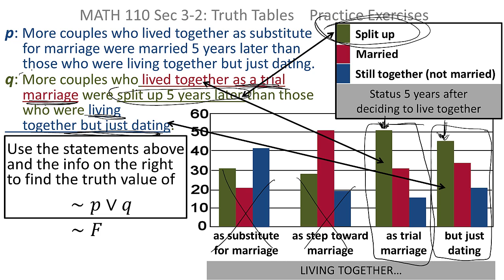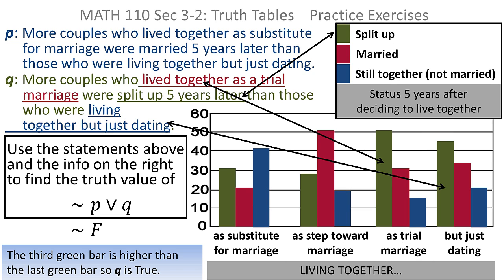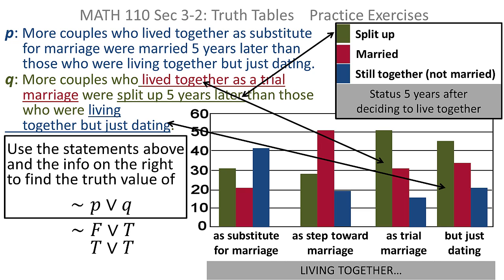Q is saying that the green bar in the 'trial marriage' grouping is higher than the green bar in the 'just dating' grouping, and you can look and see that's true. So Q is true. As it turns out, P is false and Q is true. Now of course, not false is true, so we end up with true OR true, which is true.